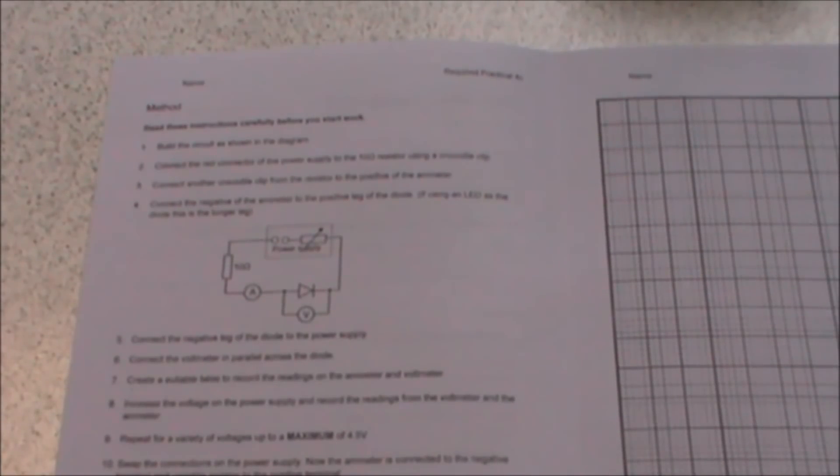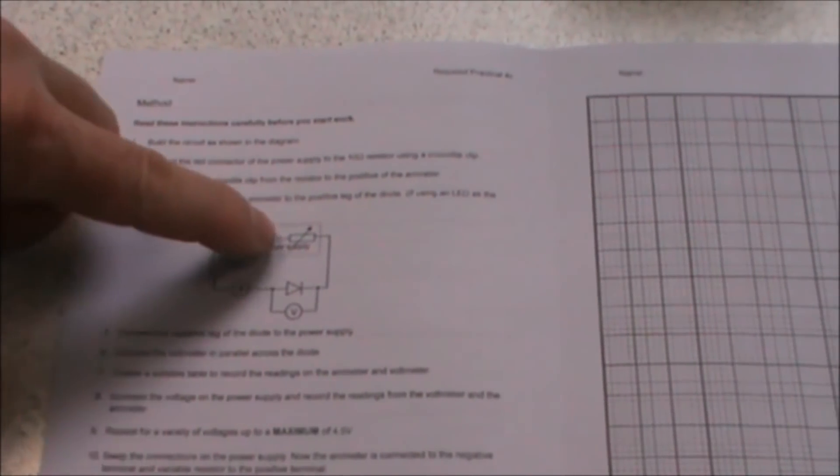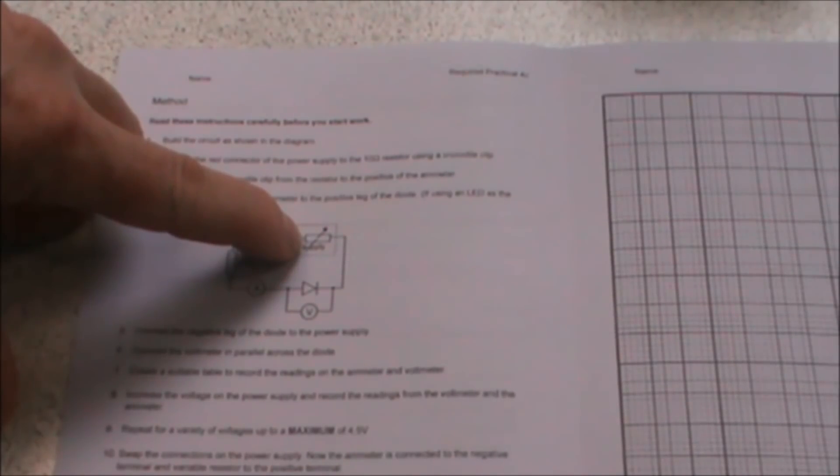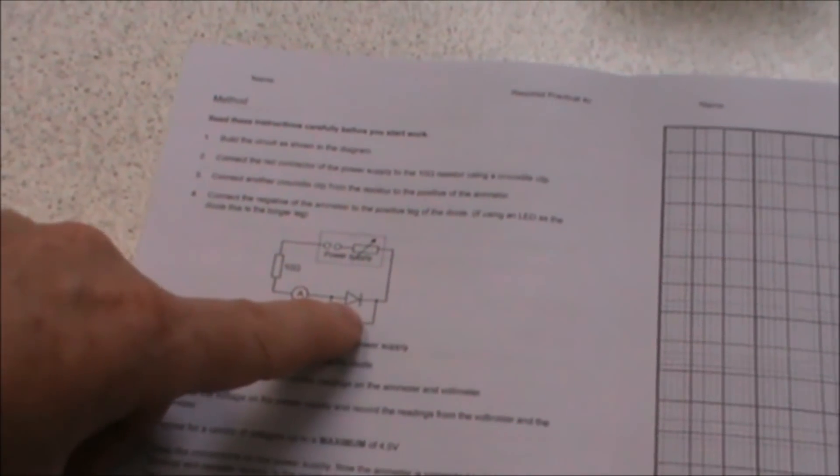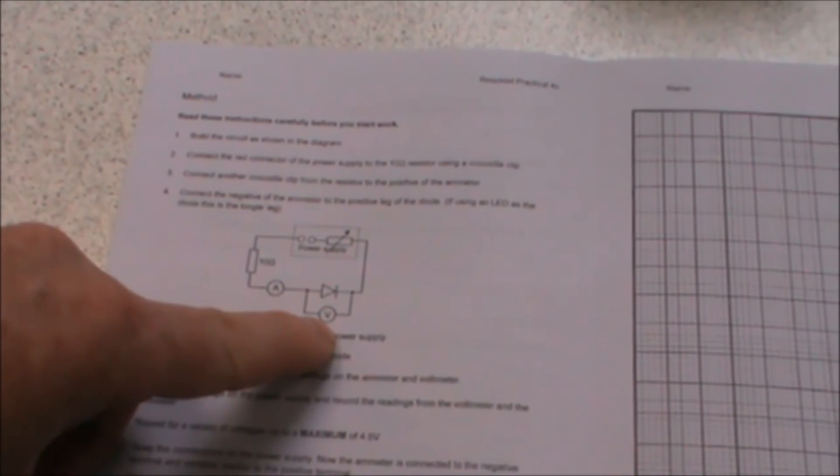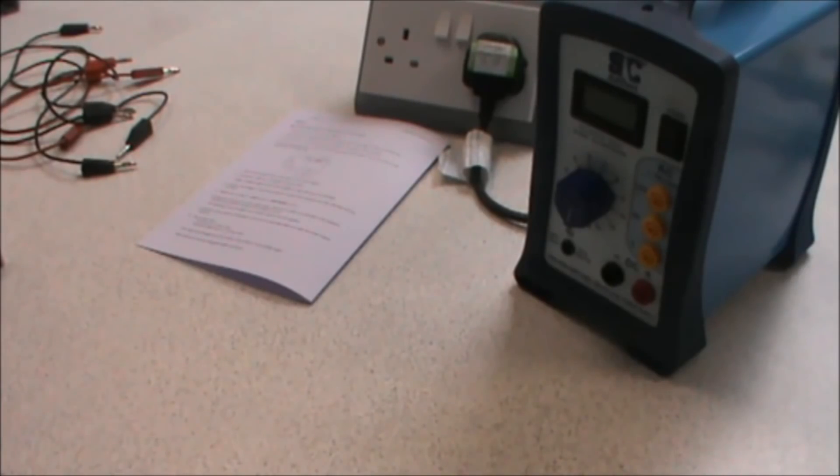If we look at the instructions, we can see our circuit diagram here. We have our power supply which includes our rheostat for adjusting the voltage across the diode, a 10 ohm protective resistor, ammeter and diode, and our voltmeter is in parallel across the diode. Now we can connect up our circuit.